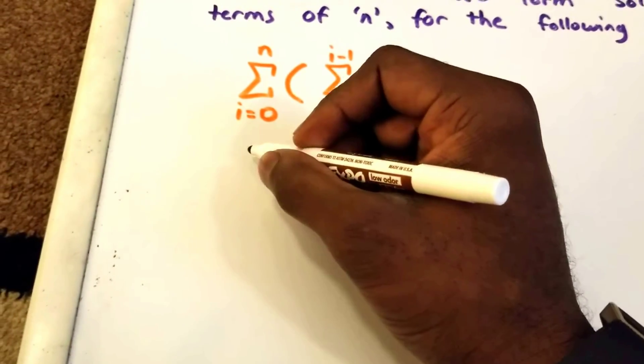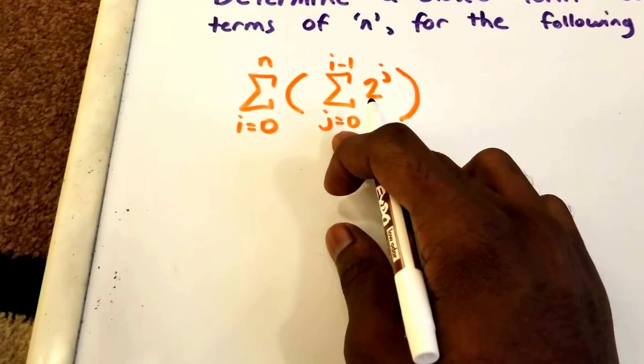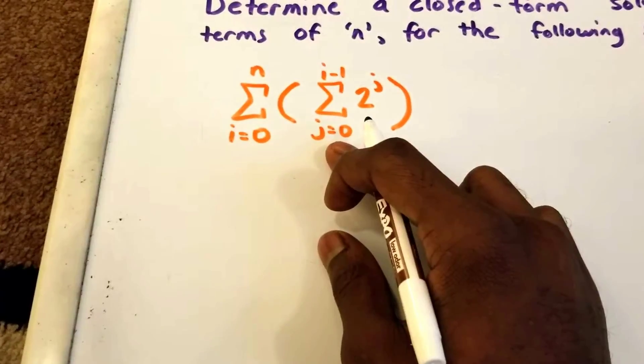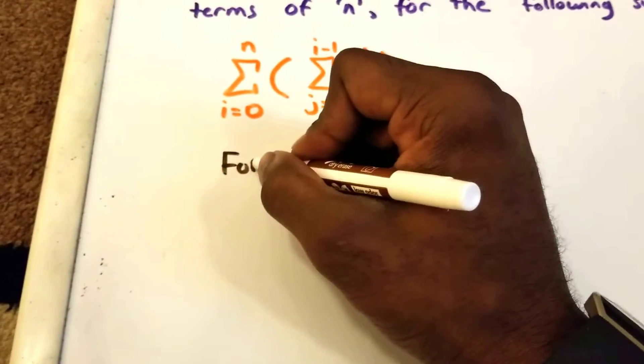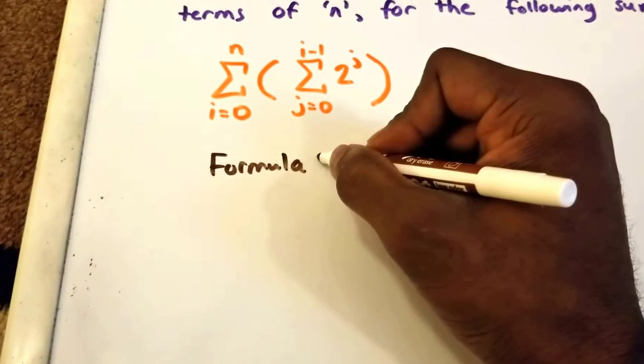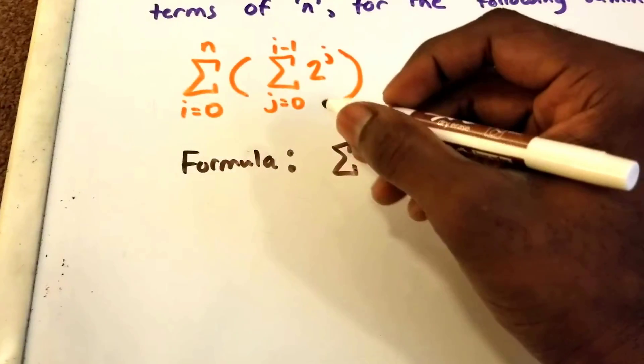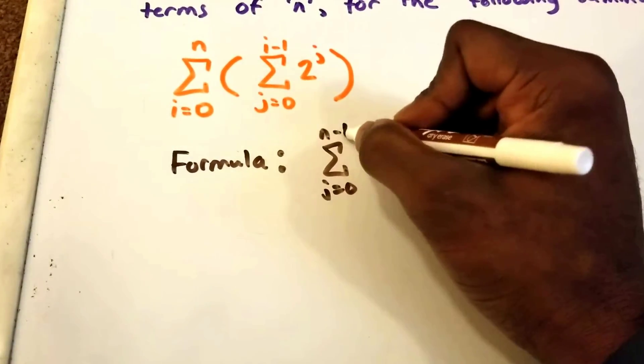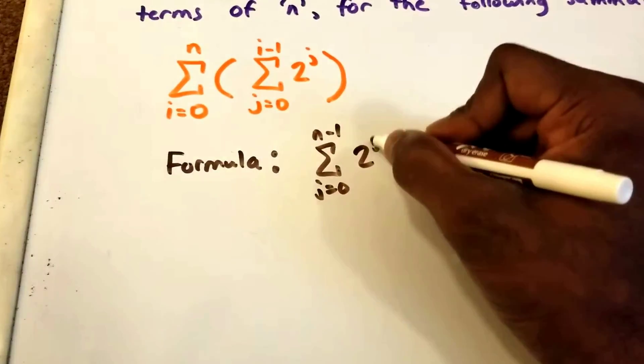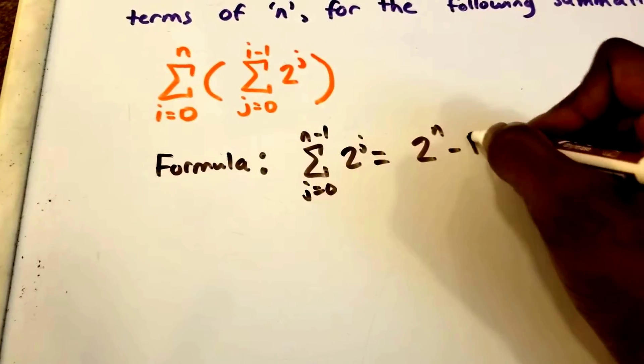First thing we need to do is figure out what this summation - the summation from j equals 0 to i minus 1 of 2 to the power of j - is, and we can use a formula. Here I'm going to put a formula that we can use to solve this. The formula states that if the summation goes from j equals 0 to n minus 1 of 2 to the power of j, then that is equal to 2 to the power of n minus 1.